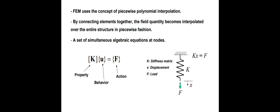We are going to connect all equations and assemble them over the entire structure in a piece-wise fashion. After adding, we get one big assembled structure — a set of simultaneous algebraic equations at nodes. K is the property, U is the behavior, F is the action. Depends upon F, you will get a result. Depends upon the property and behavior, you will get a force of action.